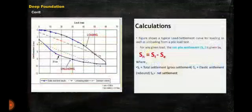In this slide I have discussed about the calculation of pile load test. The net pile settlement, that is S_n equal to S_t minus S_e. S_t means total settlement or gross settlement, and S_e means elastic settlement, and S_n means net settlement.